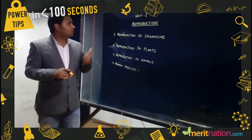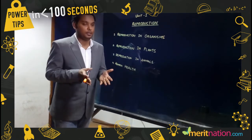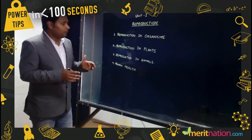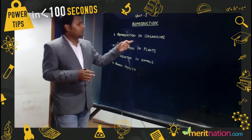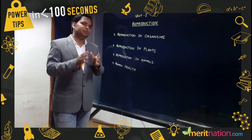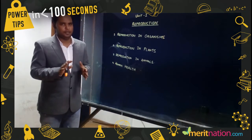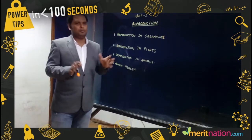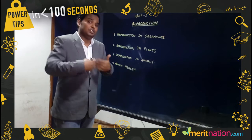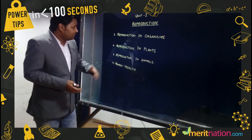This unit carries 14 marks in your board examination. For Reproduction in Organisms, you just have to go through the NCERT — it's kind of an easy chapter and you don't have to go into so much in-depth knowledge.